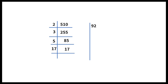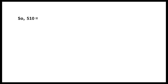17 ones are 17. 92 is an even number, so it is divisible by 2; 2 forty-sixes are 92. 46 is even; 2 twenty-threes are 46. 23 is a prime number; 23 ones are 23. So 510 is equal to 2 into 3 into 5 into 17, and 92 is equal to 2 squared into 23.